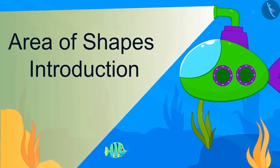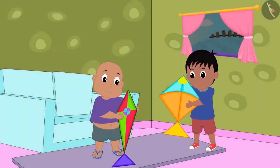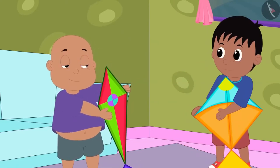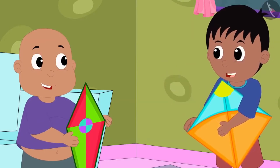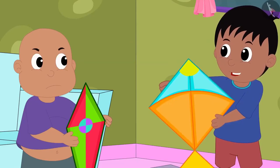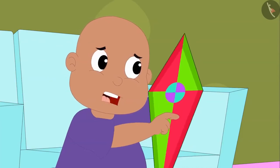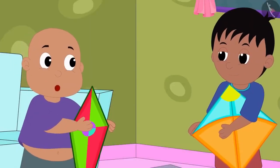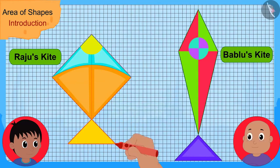In this video, we will learn to estimate the area of shapes. Raju and Bablu have made kites. Bablu showed his kite and said it was very beautiful. Raju agreed but said his kite is bigger. Bablu said his kite is bigger and more beautiful. They decided to draw outlines of both kites on a grid paper and find their areas — the one with the larger area has the larger kite. Bablu drew outlines of the kites on a grid paper.